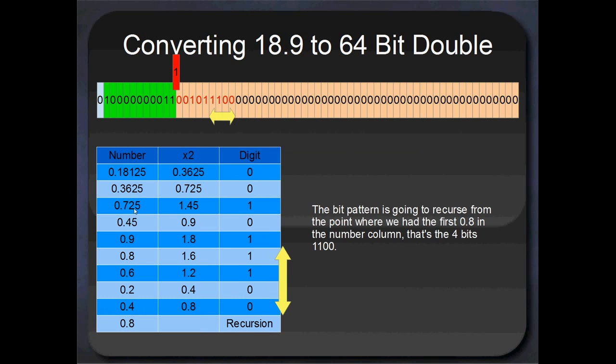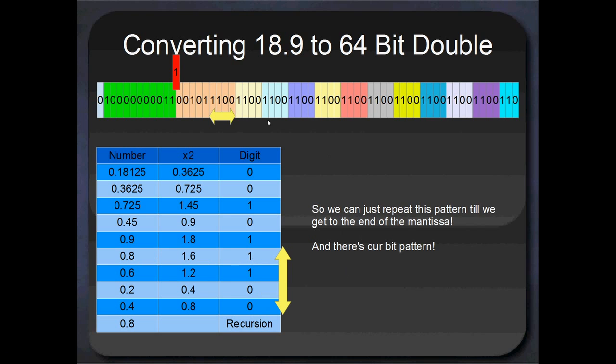That's actually a recursion that we've found. These will be the mantissa bits up until that recursion. But at that point, at the point that we get exactly the same number in the number column, we know that we've got a recursion, and the bit pattern is going to repeat forever and ever. So we also know that in IEEE 754 we can't represent this number exactly. It's going to be rounded. But we can find the first occurrence of 0.8 just here. And those four digits, 1, 1, 0, 0, that's going to be the repeating pattern. So we don't need to continue performing our multiplications by 2. We know the repeating pattern. So I've just filled out the rest of the mantissa really quickly. And that's our bit pattern really.